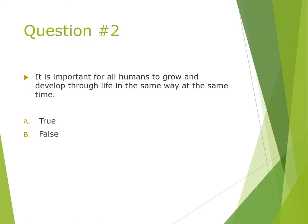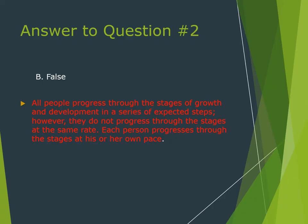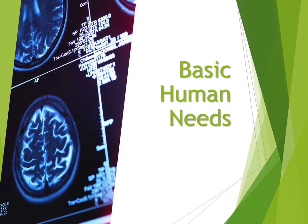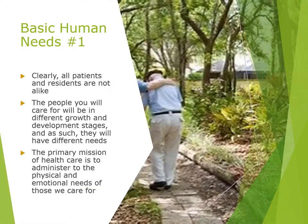Question two: Is it more important for all humans to grow and develop through life in the same way at the same time? True or false? False. All people progress through the stages of growth and development in a series of expected steps; however, they do not progress at the same rate — each person progresses at his or her own pace.